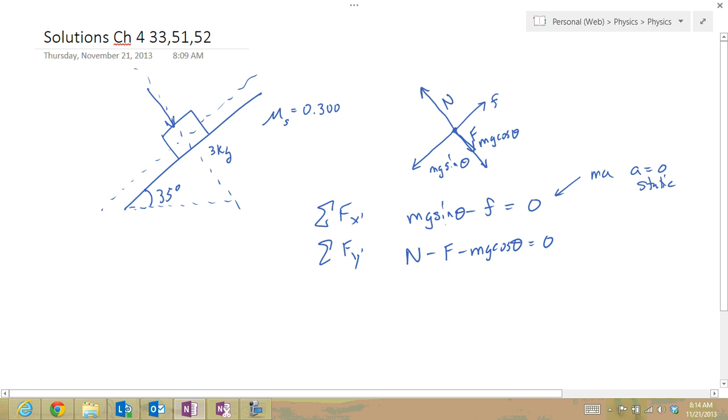So let's look at this first equation again. This first one can be rewritten as mg sine theta minus mu n. That's the definition of the friction force, equals 0.